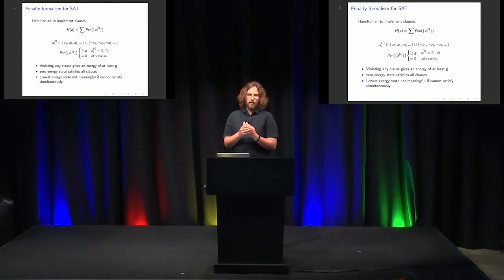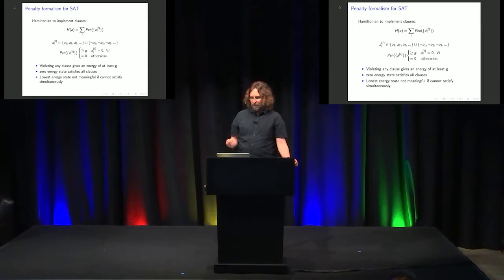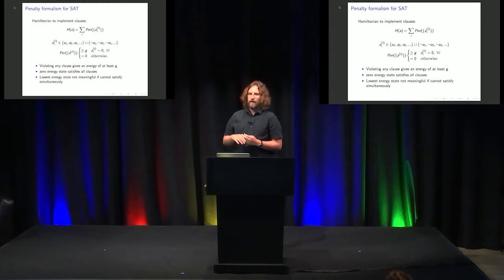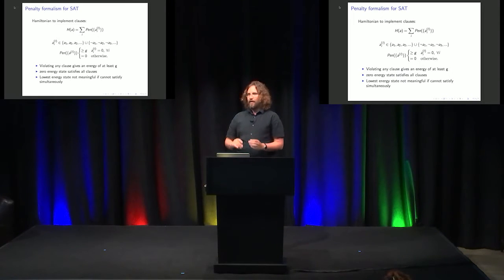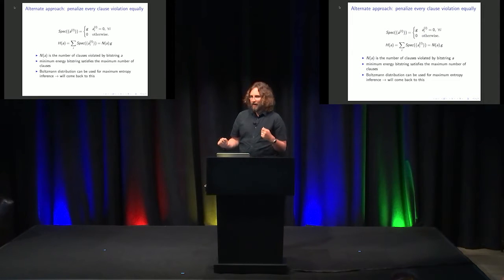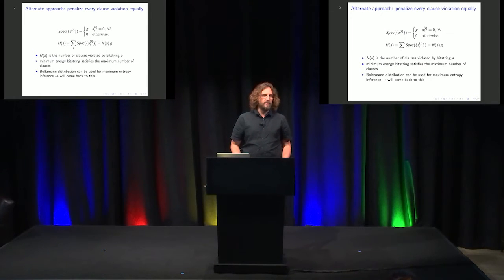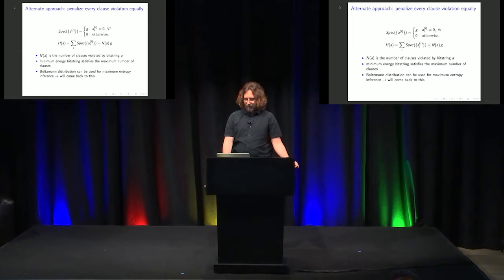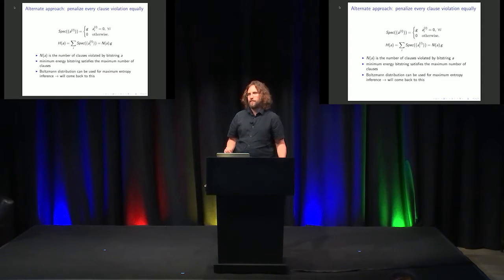In the penalty formalism for SAT, you're looking to ask whether a set of clauses can be satisfied. If the clauses can be satisfied, we want an energy of zero. If they can't be satisfied, we want an energy bigger than some gap, so we don't have spurious low energy states that will confuse our algorithm. On the other hand, if you penalize every clause violation equally, then even if your clauses cannot be all simultaneously satisfied, your solution will still be the solution that satisfies the most number of clauses. This method does involve ancillas, so this is all assuming the ancillas reach their ground state. As long as you have a good spectral separation of your spurious states, you can also use this to generate a Boltzmann distribution for sampling.